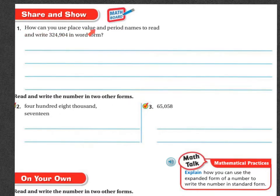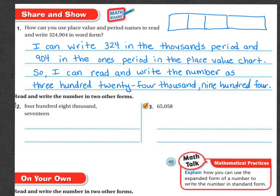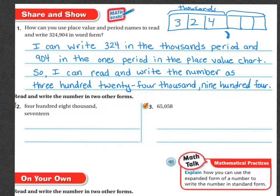Let's share and show. How can you use place value and period names to read and write this number in word form? I can write three hundred and twenty-four in the thousands period, and nine hundred and four in the ones period. So when I write my number, it's three hundred twenty-four thousand, nine hundred and four.